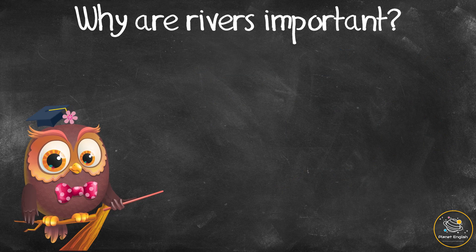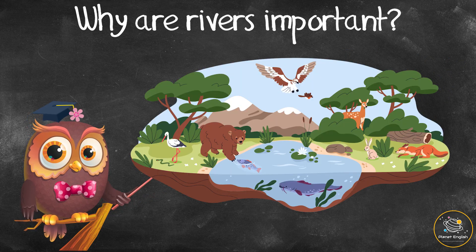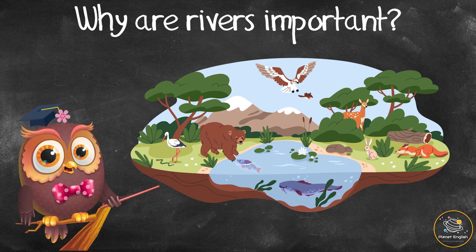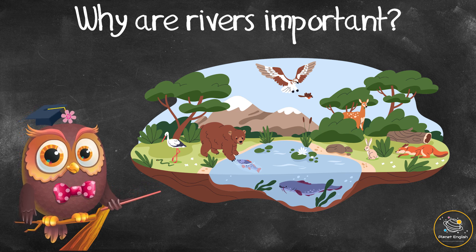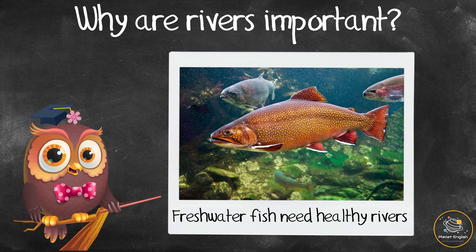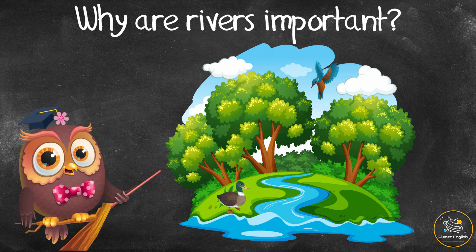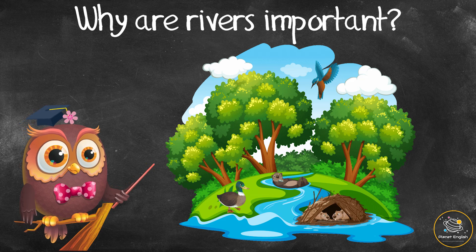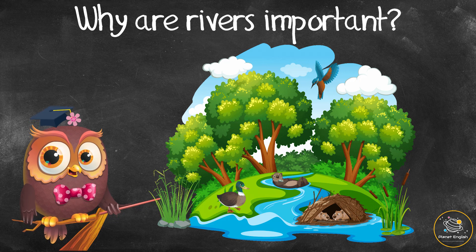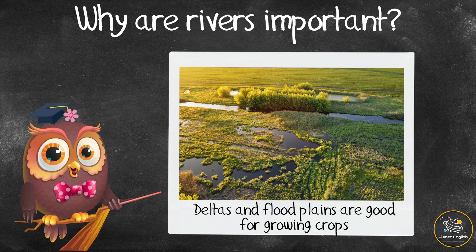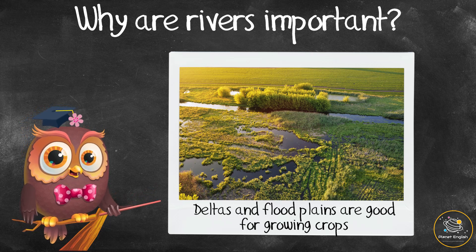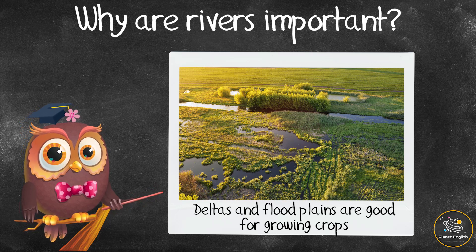Why are rivers important? Rivers and their banks provide habitats and food for thousands of plants and animals. A riverbank is the land on each side of a river. Freshwater fish rely on healthy river systems to live and breed. Animals like ducks, kingfishers, otters, and beavers make their homes on riverbanks, and plants like reeds and bulrushes grow along them. Deltas and floodplains, where rivers overflow their banks, are rich in minerals and nutrients, making them ideal areas for growing crops.